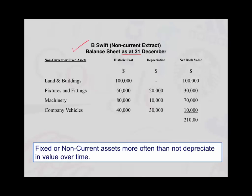So for a sole trader, we would list the fixed assets or non-current assets in order of how long you expect them to last. So obviously land and buildings of your factory will last the longest, so they go at the top, and then fixtures and fittings — which would be the doors and windows, tables, etc. — followed by machinery, and then the actual delivery vans, company vehicles, company cars, etc.